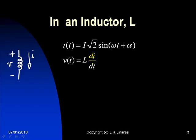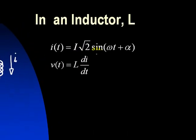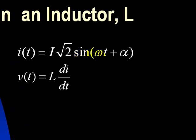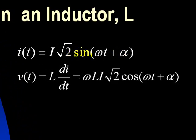We differentiate. We find the derivative of the current. The derivative of this sine is omega cosine omega t plus alpha. So that derivative is omega L I root 2 cosine of omega t plus alpha.